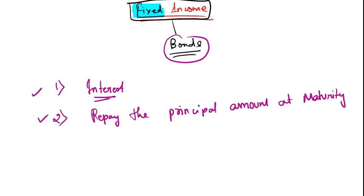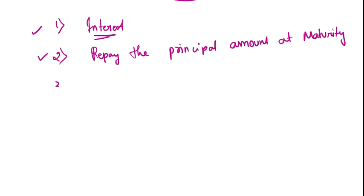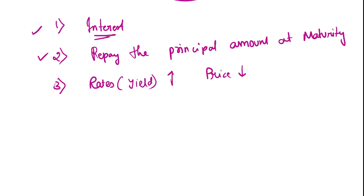Third point: when interest rate rises — in brackets you can write 'the yield, the required return' — if that required yield increases, the price of the bond decreases. If the yield increases, the price of the bond decreases, and vice versa.